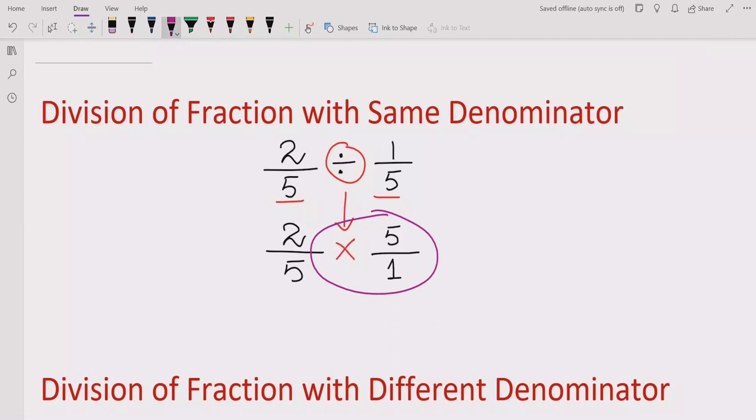Now this one is multiplication and now we can apply multiplication rule here. So numerator multiply with numerator and denominator multiply with denominator. So 2×5 is 10 and 5×1 is 5. And it can be simplified furthermore: 5 into 10 is 2 upon 1, or you can say the answer is 2.